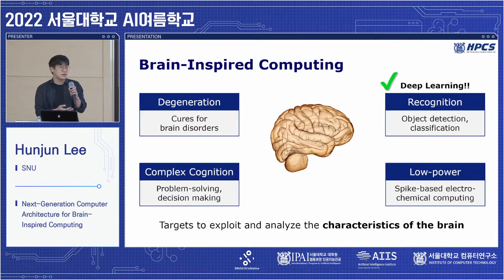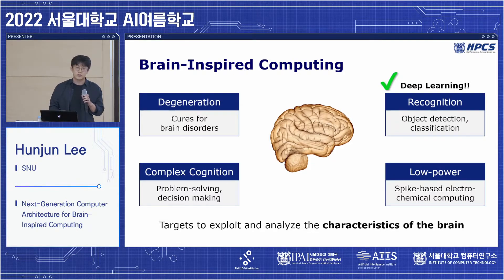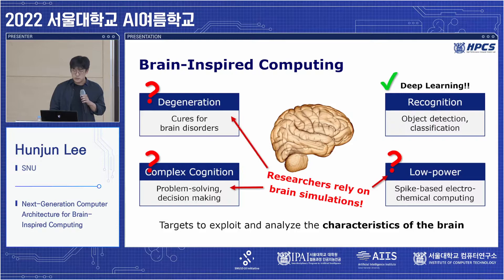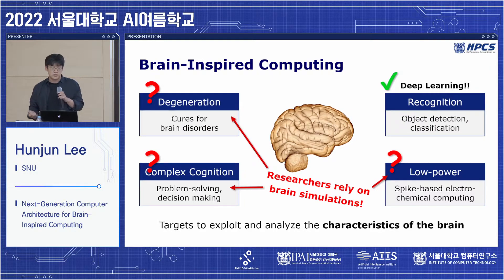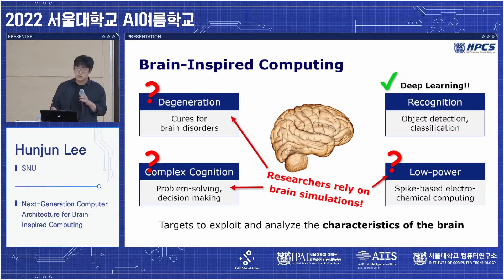Deep learning is a widely known example — it mostly targets the recognition part. On the other hand, researchers rely on brain simulations to tackle the other parts of brain-inspired computing. However, despite the potential benefits, these areas are relatively unexplored.